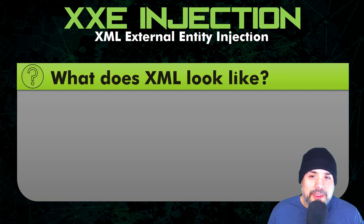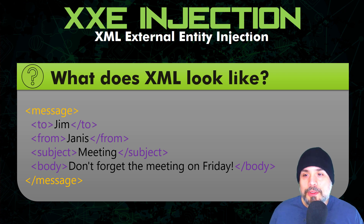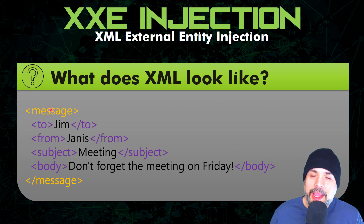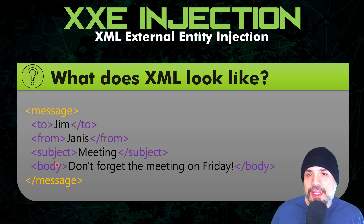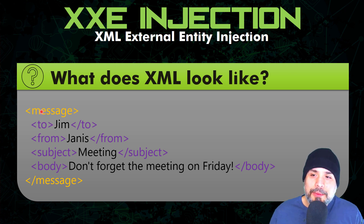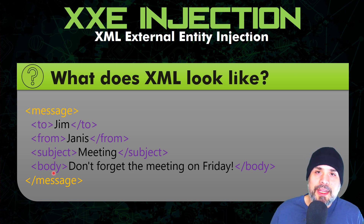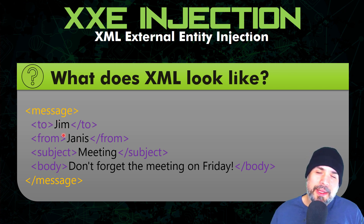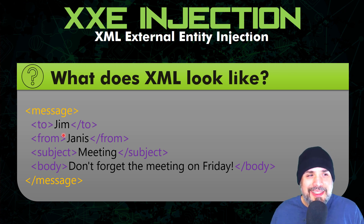So what exactly does XML look like? Here we have a sample piece of XML code. It is basically comprised of elements. The first element is the message element, and within that we have other elements: a to element, a from element, a subject element, and a body element. I like to think of this as designing a table in a database — you'd create a table called message and define fields called to, from, subject, and body. This is just to give you an example of how XML structures data within a file.